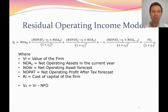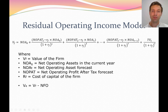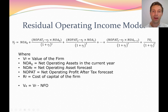The residual operating income model formula states that to value the firm's assets, it is equal to net operating assets (NOA) in the current period (time zero), taken straight from a reformatted balance sheet, plus NOPAT in time period one — net operating profits after tax from our reformatted forecast — minus the cost of capital for the firm (RF) times net operating assets in time period zero. This term is called the residual operating income.